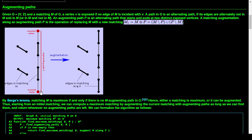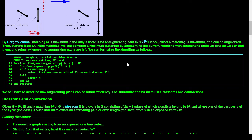An augmenting path starts and ends at two distinct exposed vertices. We find some path through the graph that alternates connected, not-connected, connected, not-connected, and then we augment it. The other lines are saying don't worry about other paths in the graph - they'll remain as they are. It's only this connecting path that's affected by alternating what is considered connected versus not-connected.